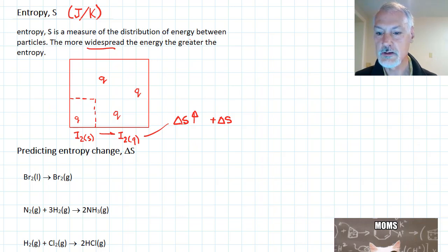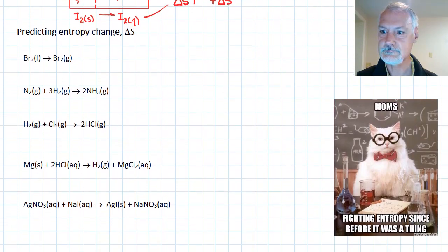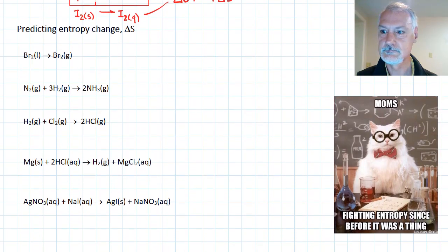IB expects us to be able to look qualitatively at a reaction and have some idea of how entropy is changing, as well as quantitatively, to actually calculate what the entropy value is. So let's first of all look at predicting it. What I'm looking for in predicting is what is the more widespread state of energy.